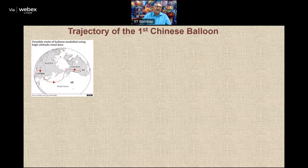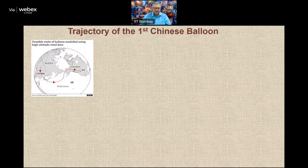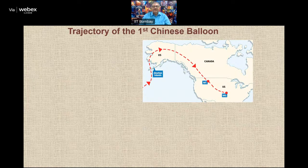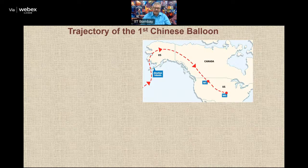Looking at the trajectory of the first Chinese balloon using high-altitude wind modeling data — as reported by the BBC — and based on scientific data of wind patterns at that time of year, it was predicted that the balloon would go from China to South China Sea and then over the Pacific. It entered US territory from Alaska, but it took quite some time before anyone realized it was an unknown flying object. Then it entered Canada, where there was a proposal to shoot it down, but it did not materialize. By the time things were figured out, the balloon had come back into US territory.